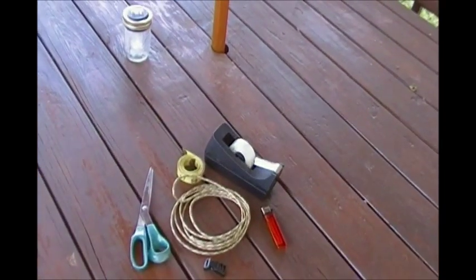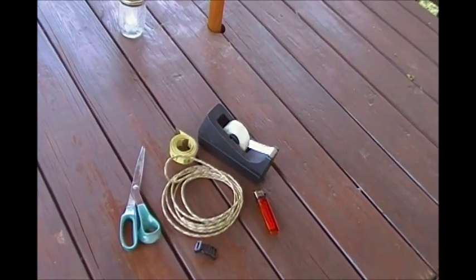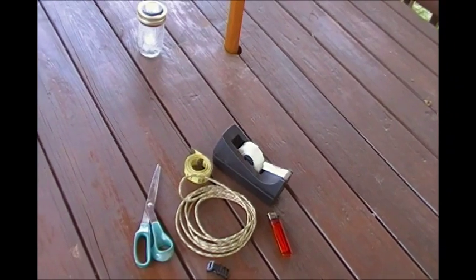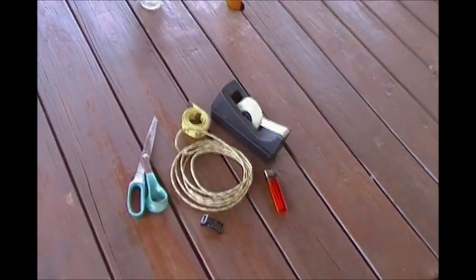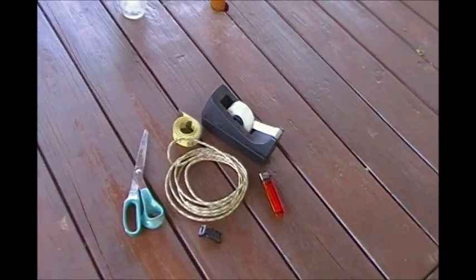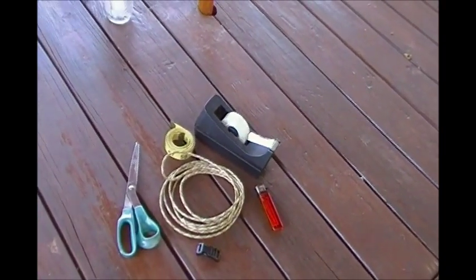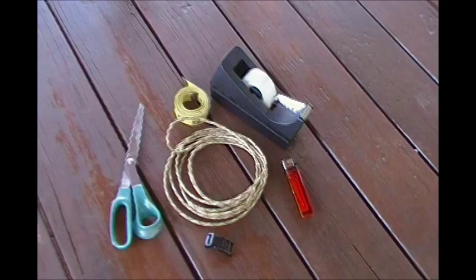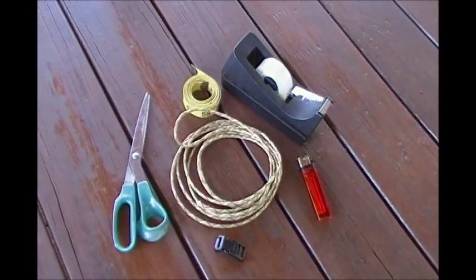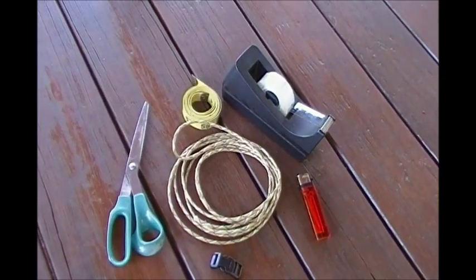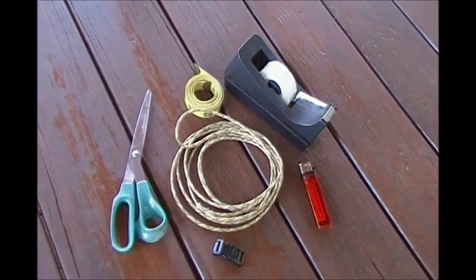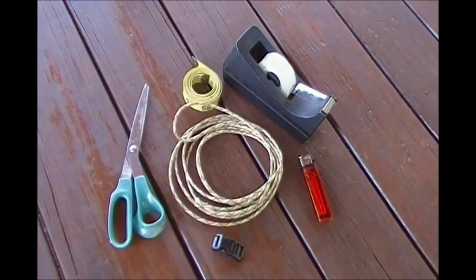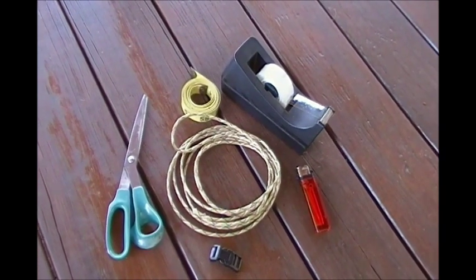Hello everyone, my name is Rob and today we're going to make a paracord survival bracelet. I'm outside on my deck today with the sounds of chickens in the background, and we're looking at the supplies we're going to use today to make our bracelet: a pair of scissors, paracord, a measuring tape, a buckle, and a lighter.